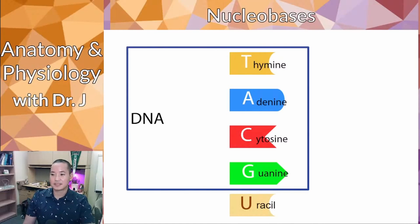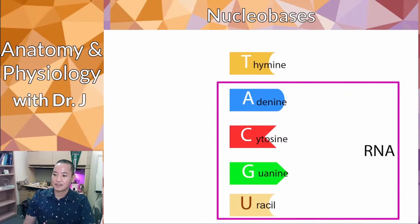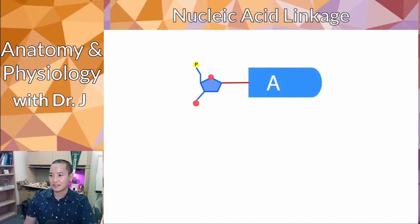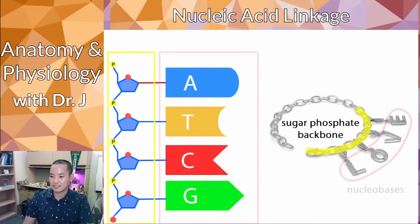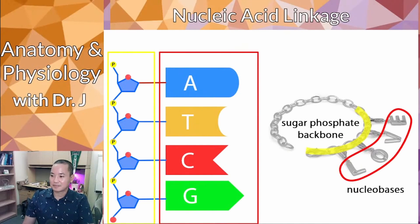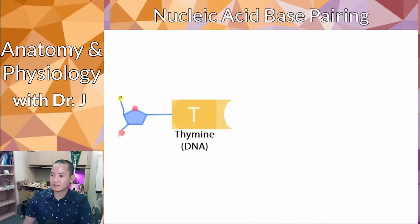DNA has a set of four nucleobases. You have the sugar and phosphates, but which nucleobase you have varies along the nucleic acid. RNA also has four bases, but RNA does not have thymine — it has uracil instead. This is how you link the nucleic acid. It's kind of like a friendship bracelet: you have that constant part that repeats, plus these nucleobases that dangle off and vary depending on the sequence, chromosome, and gene.